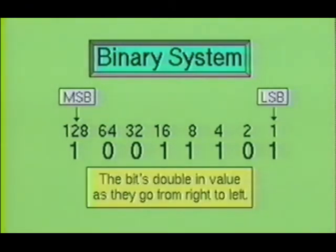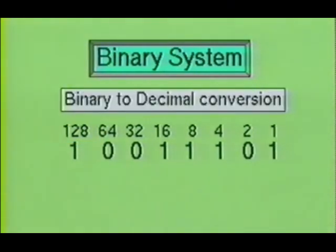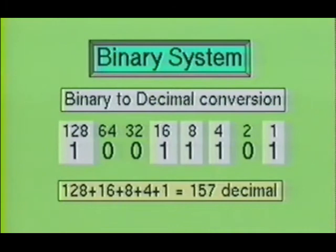Since binary numbers are raised by the power of 2, they will double in value each time the positional notation moves one place to the left. Starting from right to left, the numbers double in magnitude for each position. Each bit is assigned a certain value depending on its positional notation. When converting from binary to decimal, you simply add the values of each bit which contains a 1. In the byte being illustrated, we have 128, 16, 8, 4, and 1. When we add 128 plus 16 plus 8 plus 4 plus 1, we acquire the sum of 157.